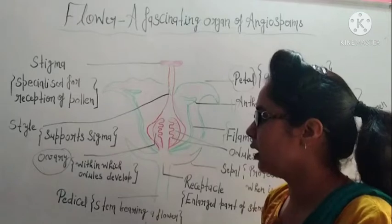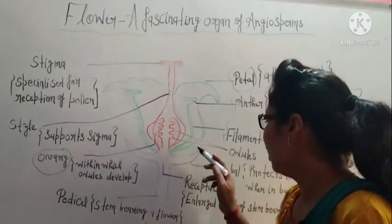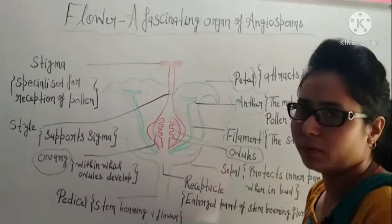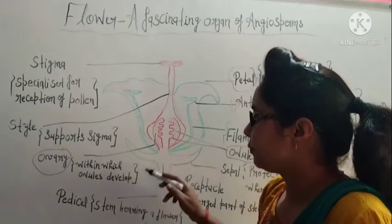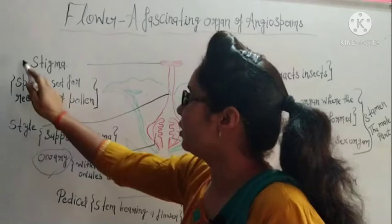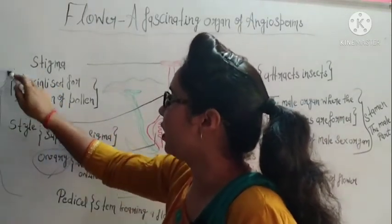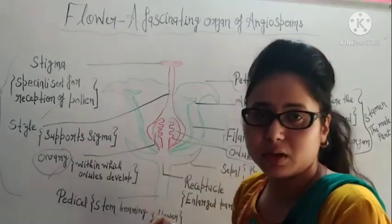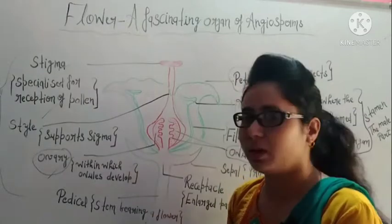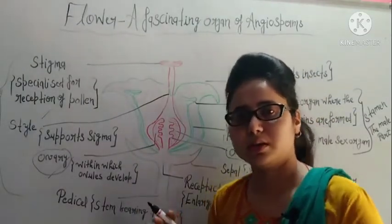Below the style you will also see a swelling structure — this swelling structure is called the ovary, within which ovules develop. So stigma, style, and ovary together form the female flower parts — the female flower organs — and collectively their unit is called the carpel.